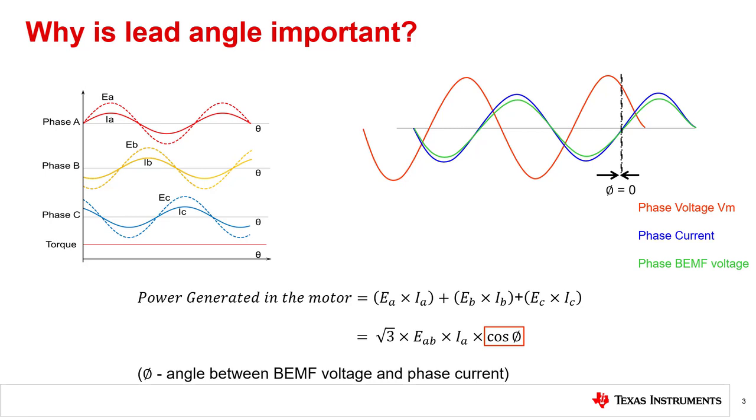Any phase difference between back EMF and current results in flux weakening, reduced torque, and low efficiency.